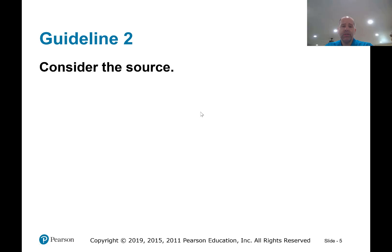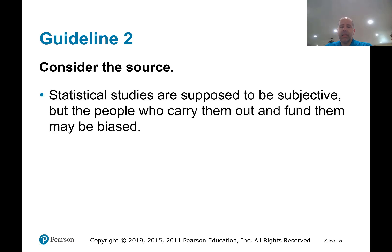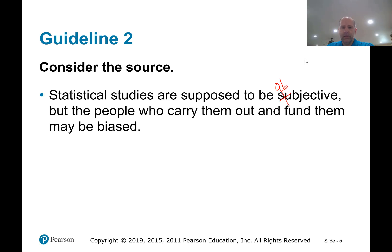Guideline number two: consider the source. Statistical studies are supposed to be objective — I think objective is more appropriate here — but the people who carry them out and fund them may be biased.